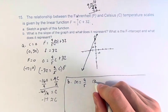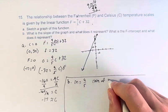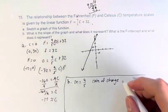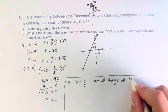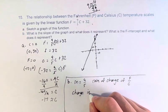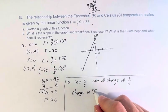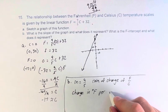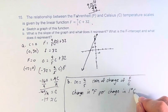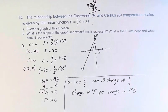And it is the rate of change of the dependent variable over the independent variable, so of F over C. It's the change in F in degrees Fahrenheit per change in one degree Celsius. Every one degree Celsius you go up, you go up 9/5 degrees Fahrenheit.